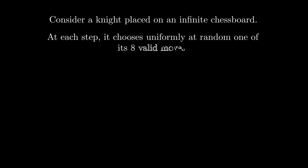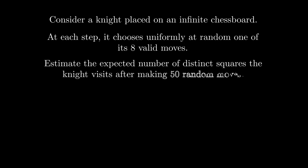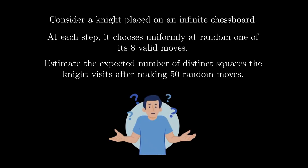Here's another example problem. Consider a knight placed on an infinite chessboard. At each step, it chooses uniformly at random one of its eight valid moves. Estimate the expected number of distinct squares the knight visits after making 50 random moves. Finding the exact answer to this problem is practically impossible without computer help. Instead, you're expected to provide a reasonable estimate. While standard techniques for calculating expected values may be somewhat helpful, the key is to quickly approximate using intuition or clever heuristics. If you're unprepared for estimation problems, you might panic and freeze under pressure.